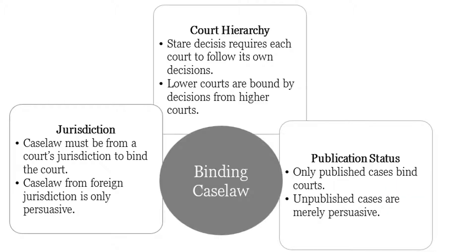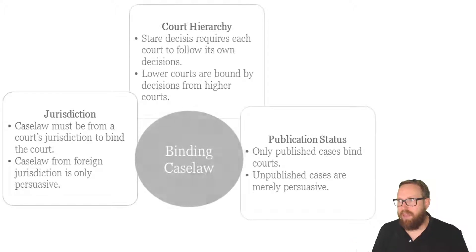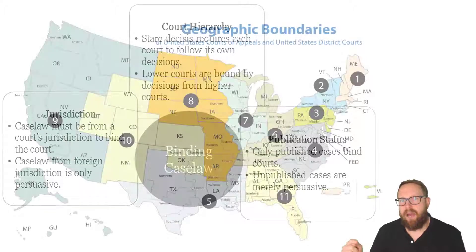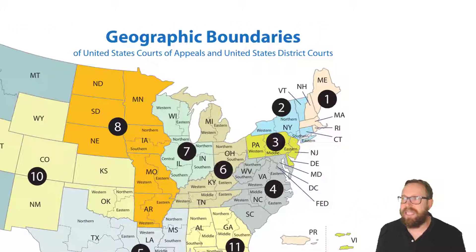Skill 4.7 is where we need to be aware of what's binding authority — what case law would bind the court we would end up in and would bind our client. The first thing we'll look at is jurisdiction. If you look at this map here, you'll see that Detroit, which is where this research scenario happened, is in the Eastern District of Michigan. And the next thing we need for binding case law is court hierarchy. The court that's higher up than the federal district court for the Eastern District of Michigan is the Sixth Circuit.